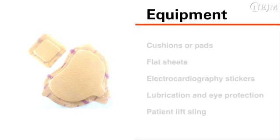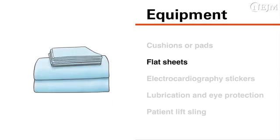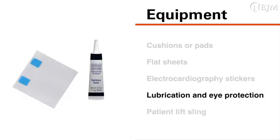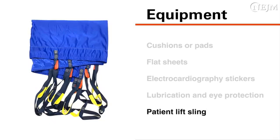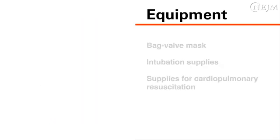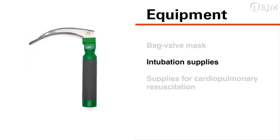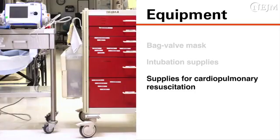To perform the procedure, you will need the following equipment: cushions or pads, flat sheets, electrocardiography or ECG stickers, lubrication and protection for the patient's eyes, and optionally a patient lift sling. A bag valve mask, intubation supplies, and supplies for cardiopulmonary resuscitation must be readily available.